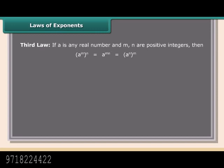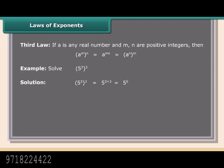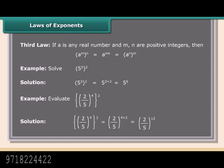Third law: If A is any real number and M, N are positive integers, then A raised to the power M raised to the power N equals A raised to the power M times N, which also equals A raised to the power N raised to the power M. Example: Solve 5 raised to the power 2 raised to the power 3. Solution: 5 raised to the power 2 into 3, which equals 5 raised to the power 6. Example: Evaluate 2 upon 5 raised to the power 4 raised to the power 3, which equals 2 upon 5 raised to the power 12.